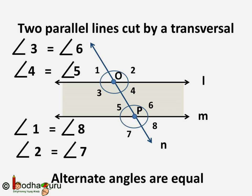So, when 2 parallel lines are cut by a transversal, then the alternate angles are equal.